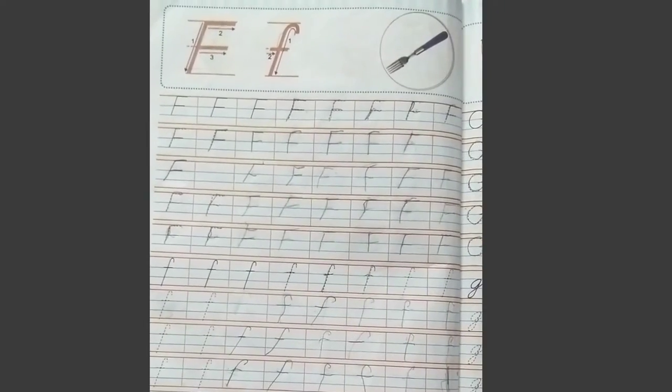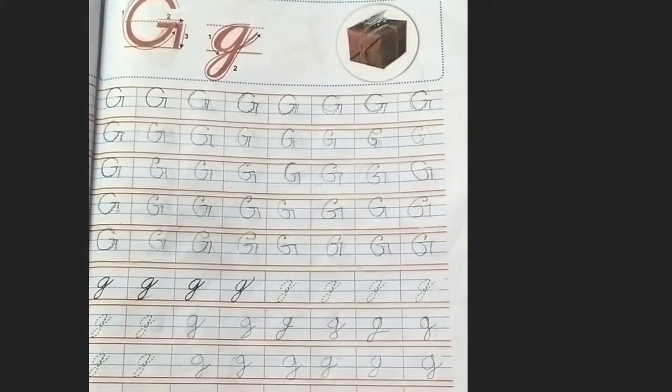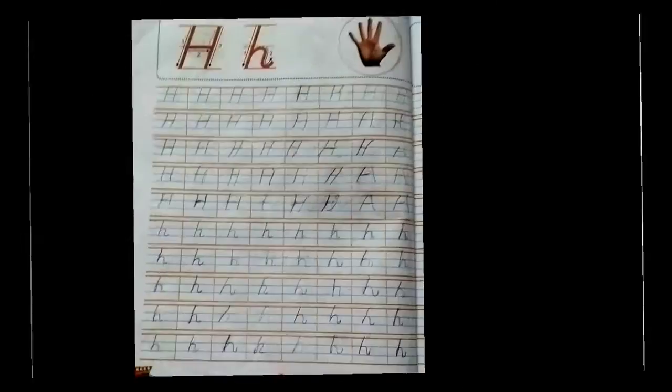Capital F and small f, F for frog. Capital G and small g, G for gift. Capital H and small h, H for hand.